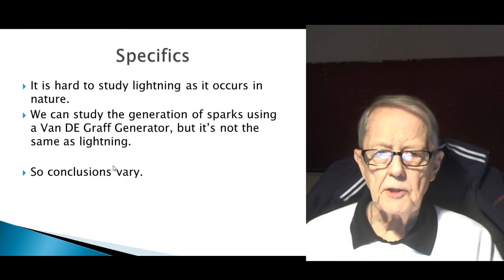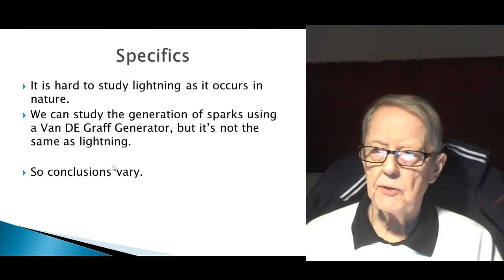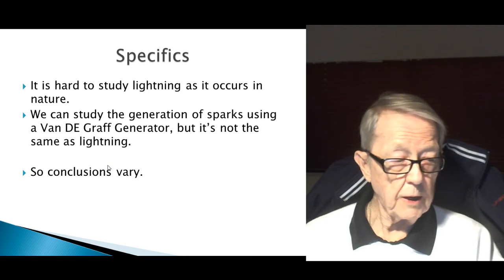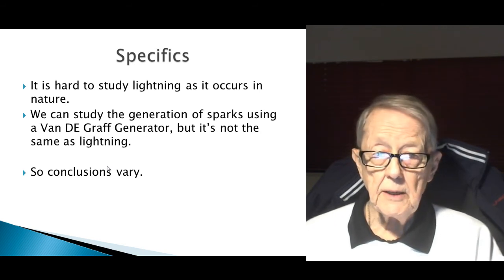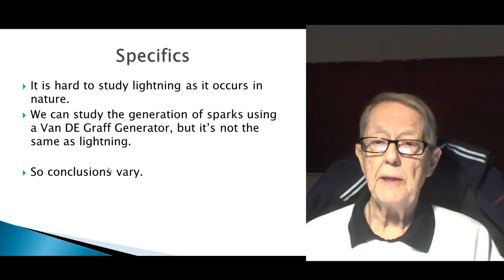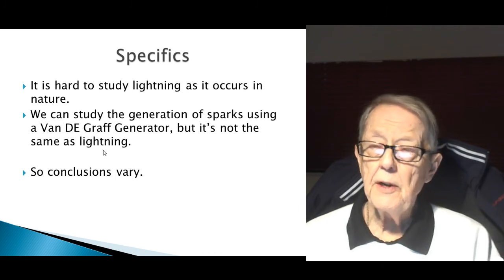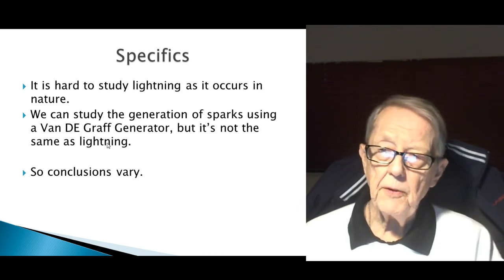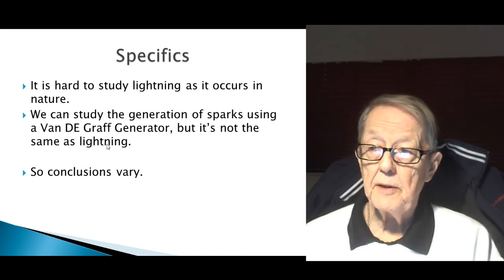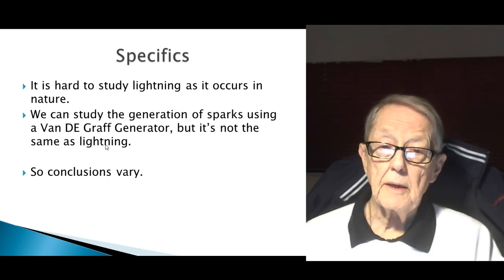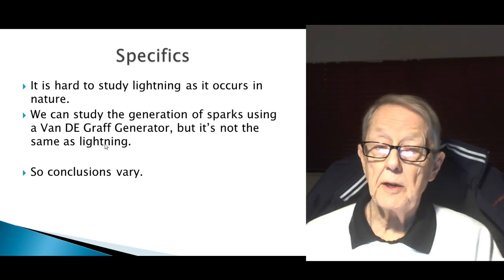It's hard to study lightning as it occurs in nature. You've got very strange things — lightning balls have been reported, where people have seen a lightning ball actually flow through an airplane, like it was walking down the aisle. But we can study the generation of sparks using a Van de Graaff generator, though it's not the same as lightning. So you can understand why there's some confusion about how it happens, but I think the particle model has something to say.